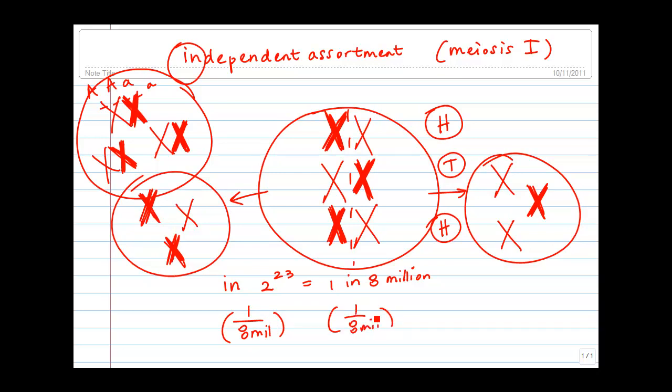So the chance that a single couple has the same child twice, meaning the same egg cell and the same sperm cell, which means we have to use the rule of multiplication, that chance now becomes 1 in 64 trillion.